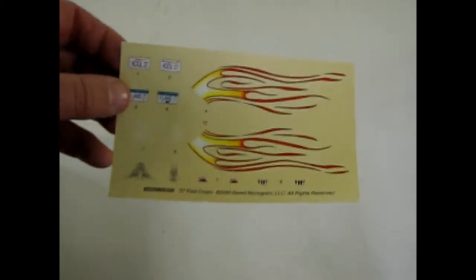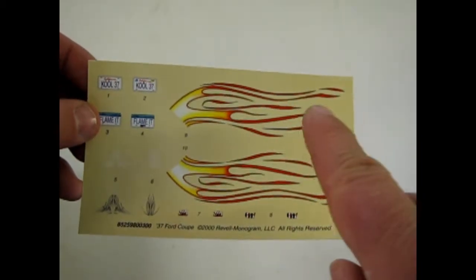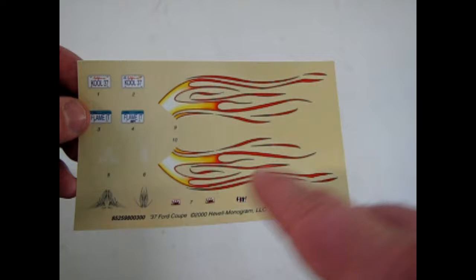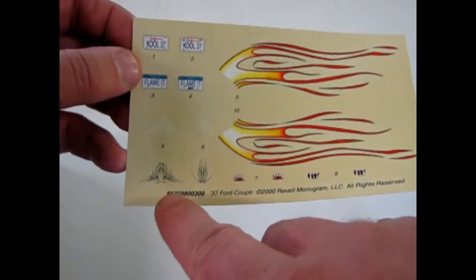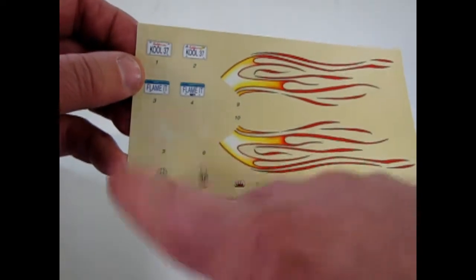Now let's look at our decal sheet. And here it is with these really cool flames that sort of drip off the ends. Two license plates and our pin striping sitting right there.